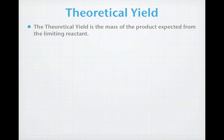Theoretical yield is just another name for something you've already been calculating. It's the mass of the product that's expected starting from the limiting reactant. So in the previous lessons, when you were calculating the amount of product that can be formed, that is actually called the theoretical yield.